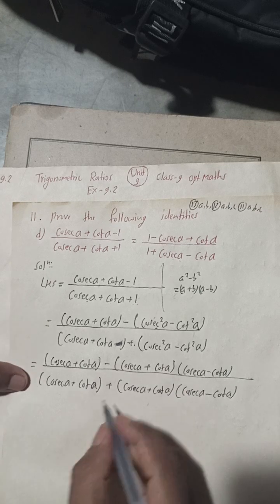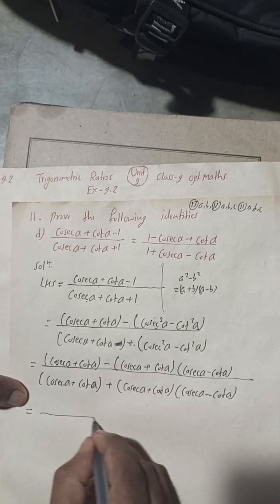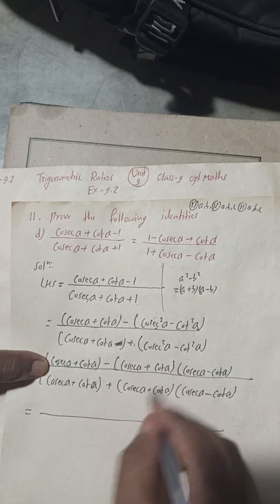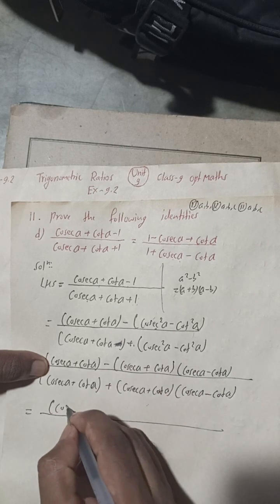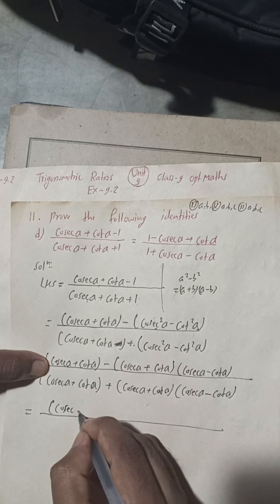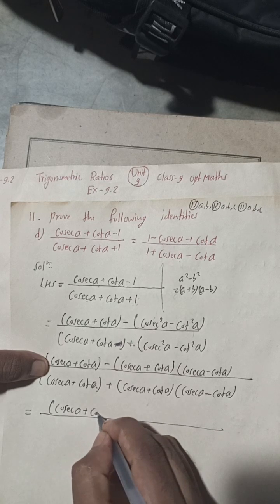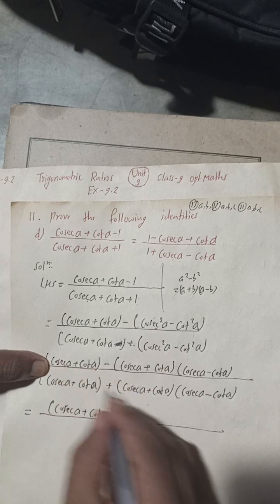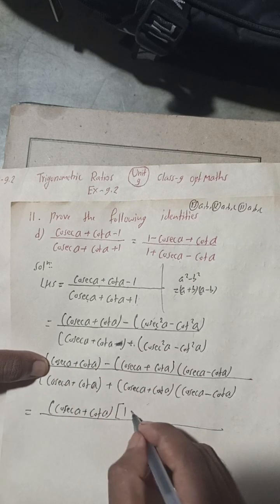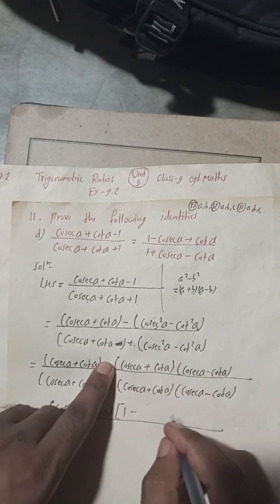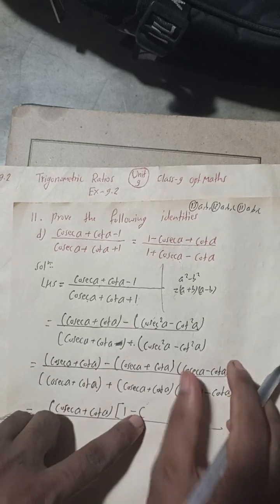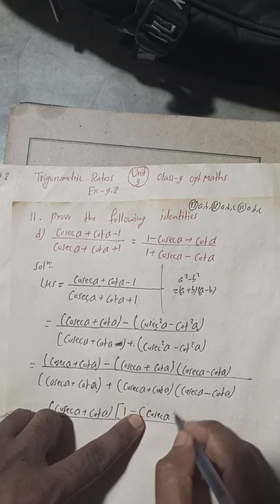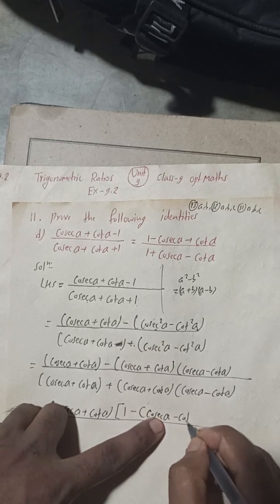Now take (cosec α + cot α) as common in the numerator. After taking it common, we get (cosec α + cot α) times the bracket, with 1 and then minus (cosec α - cot α).